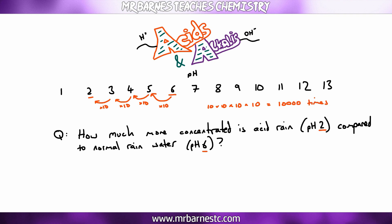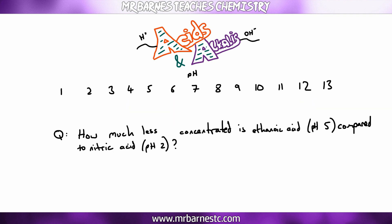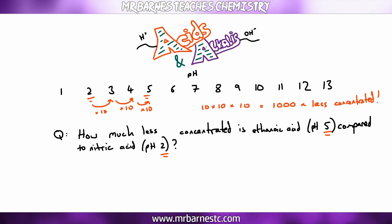It works the other way too. If a question asks how much less concentrated is ethanoic acid at pH 5 compared to nitric acid at pH 2, you go from pH 2 up to pH 5 — that's an increase of 3 — so it's 10 × 10 × 10, meaning 1,000 times less concentrated.